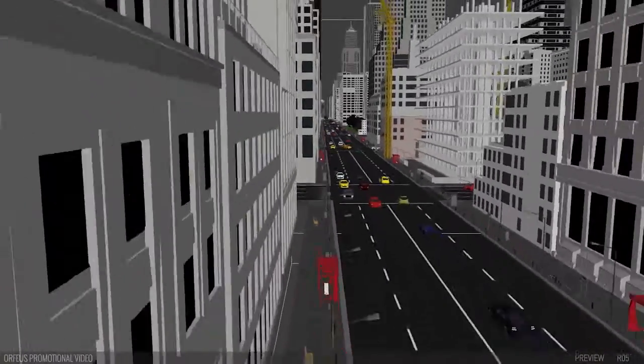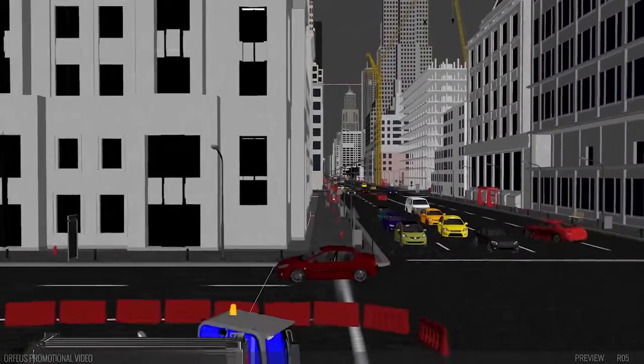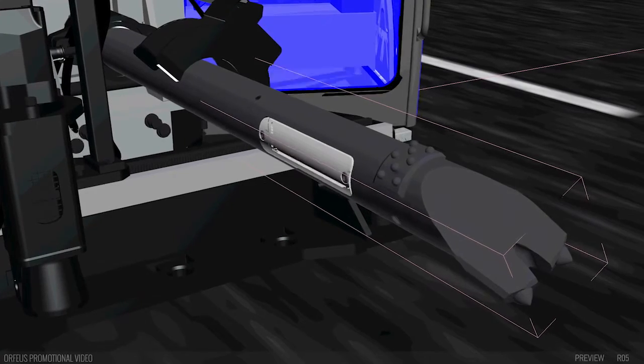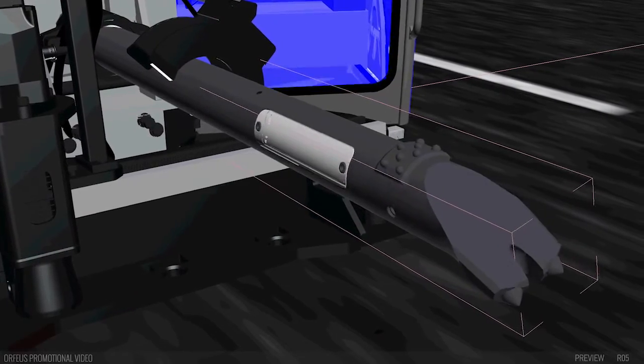What if there was a way for HDD to detect hidden underground obstacles and avoid them? Orpheus is an innovative HDD radar which does precisely that.